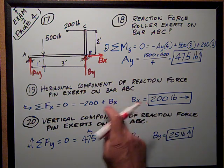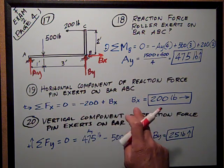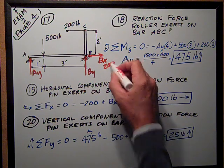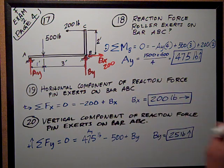So take the 200 to the other side of the equal sign, I get BX is equal to 200 pounds, positive to the right.